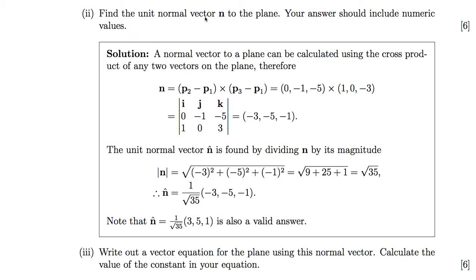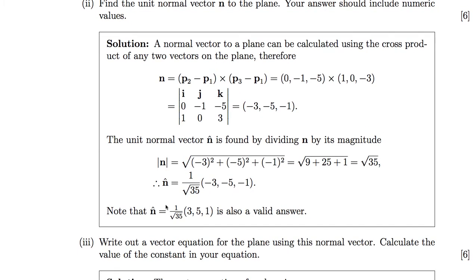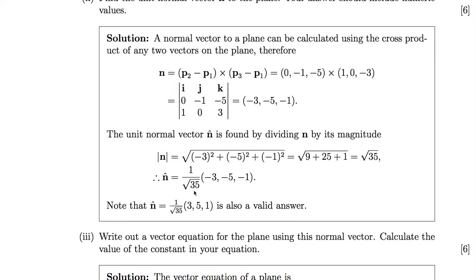Part two: find the unit normal vector N to the plane. The unit vector to a plane is perpendicular, so we can use the cross product between any two vectors on the plane. I've used P2 minus P1 and P3 minus P1. Calculating the cross product, we end up with minus 3, minus 5, minus 1. To normalise N, we divide by its magnitude, which is the square root of the sum of each element squared — in this case root 35. So dividing our normal vector by root 35 gives us the unit normal.